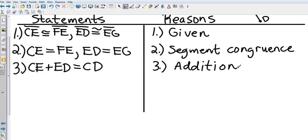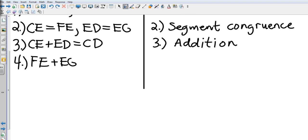So in step 4 we're going to say that FE plus EG, we're going to say that that also equals CD because of substitution.